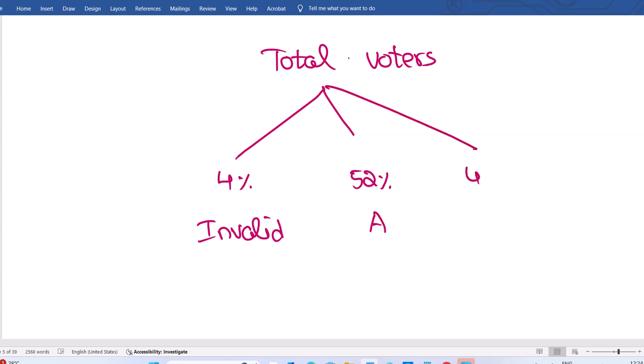Remaining 44% supported B. A won by 600 votes means the difference. The difference here is 8%, that is equal to 600, and we can say 1% is equal to 75.